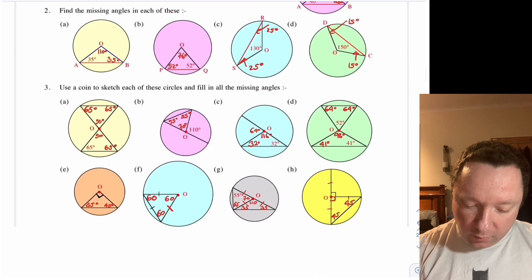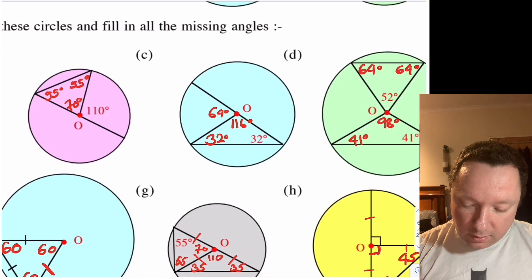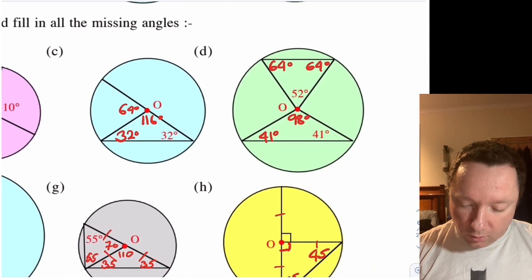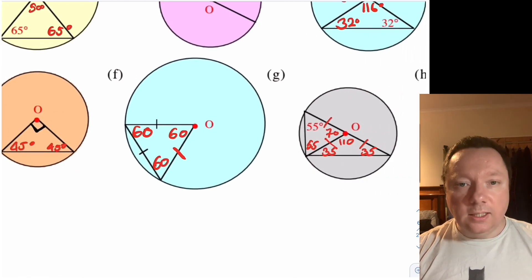And then moving down to equation three, that should say 50 here. Notice this one, completely separate triangles, but you've got your radiuses there and there. It's a right angle, they're all the same, so 60 each.